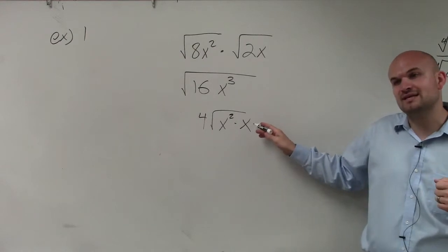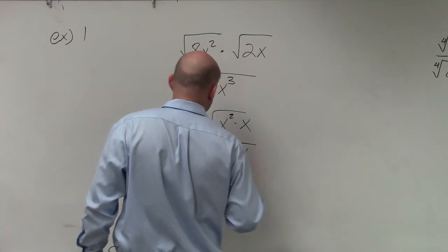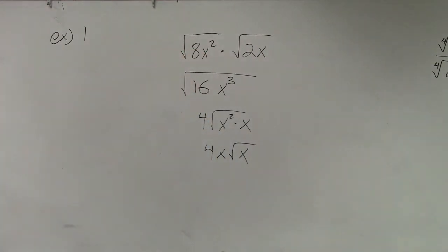And then I'm going to be left with an extra x under the radicand still, or under the radical symbol. So I have 4x times the square root of x, which would be your final answer. Anybody have any questions on that?